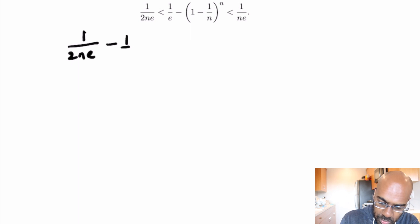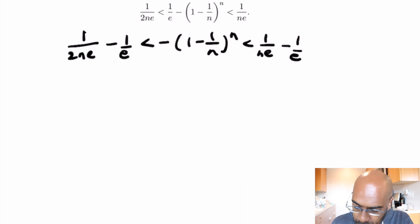negative 1 over 1 minus n to the n being less than 1 over ne minus 1 over e.